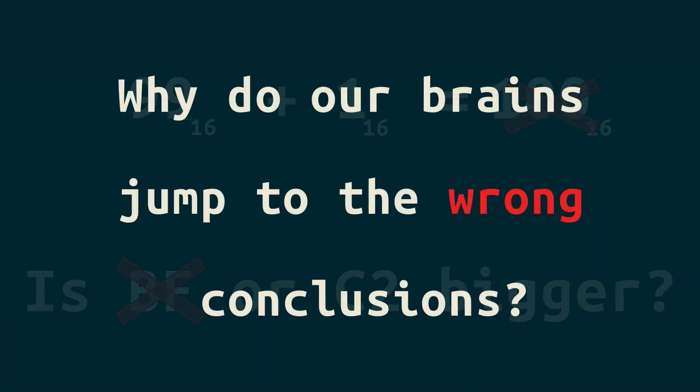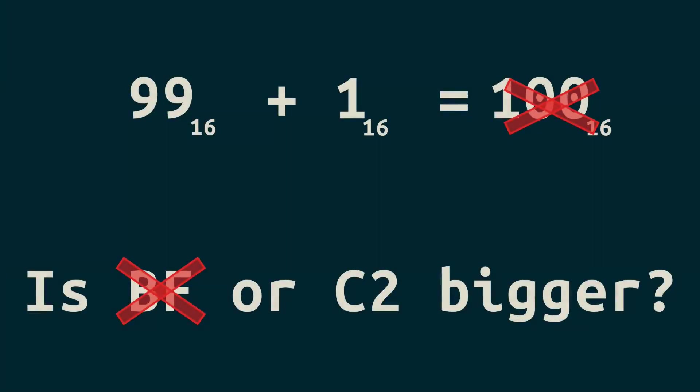Why? In short, our previous learning experiences, which normally help us learn new things better, have the opposite effect here. We're so used to seeing 100 coming after 99 and letters meaning variables, that we jump to the wrong conclusion in both cases. So how can we deal with this?